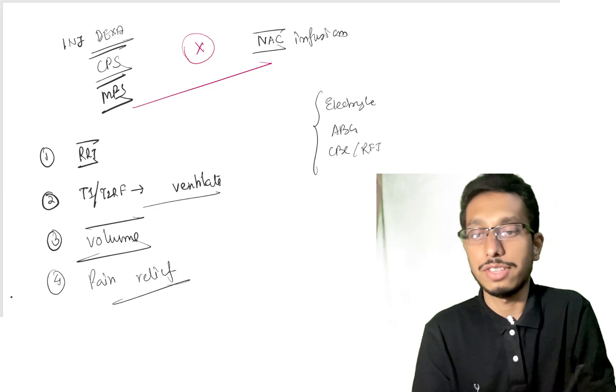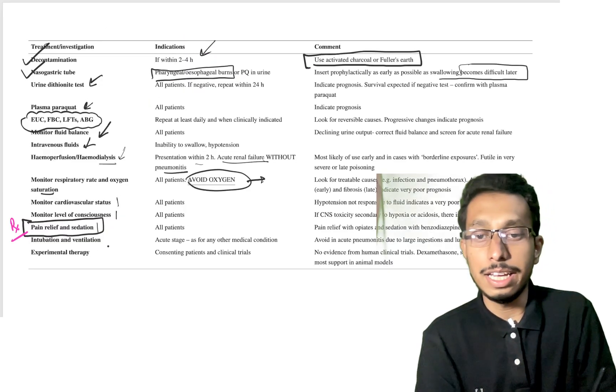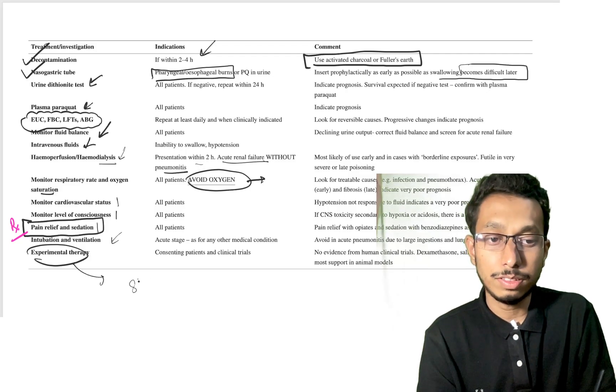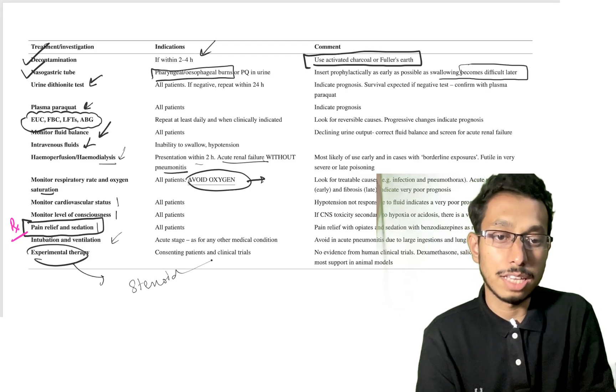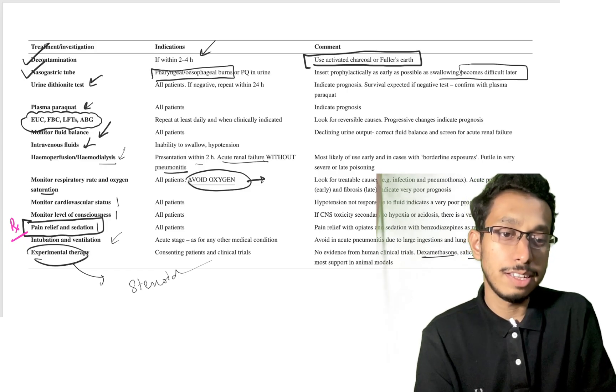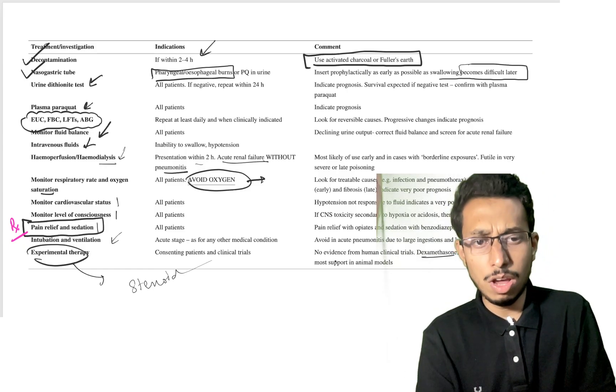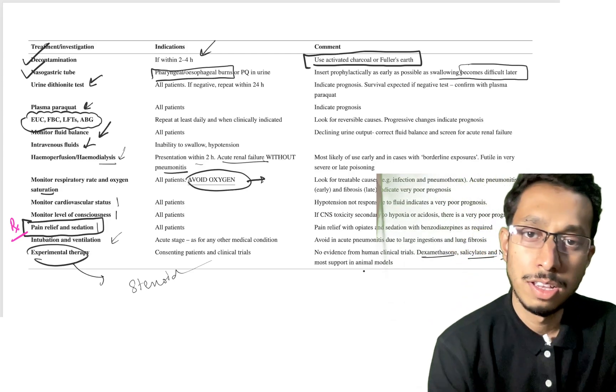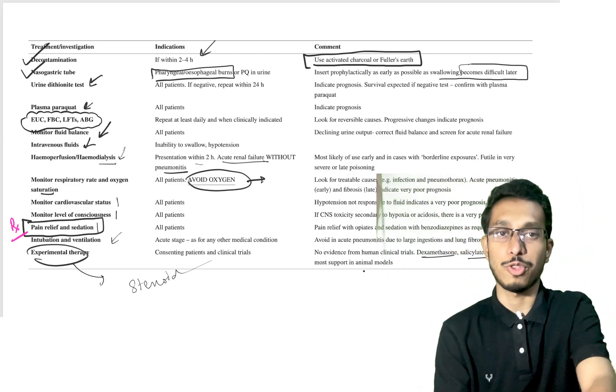Pain relief should be addressed in such patients. Intubation and ventilation may be needed. Experimental therapy includes steroids like dexamethasone, salicylates, or N-acetylcysteine injection. There's no evidence from human clinical trials, but animal models have shown successful results. That's all about paraquat poisoning.